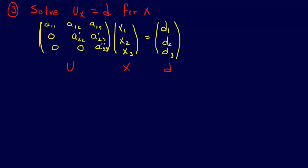And so we have the equation a33 double prime times x3 equals d3. And by the way, this is back substitution.